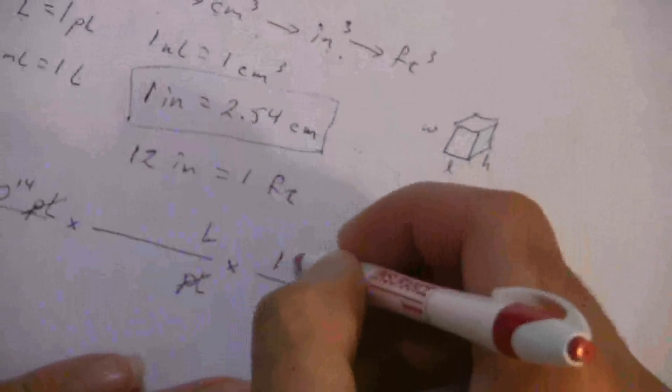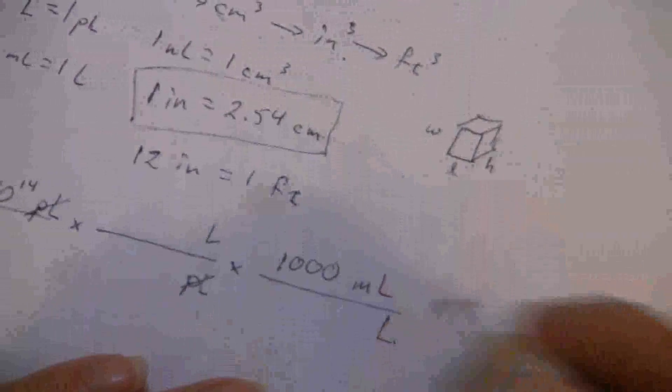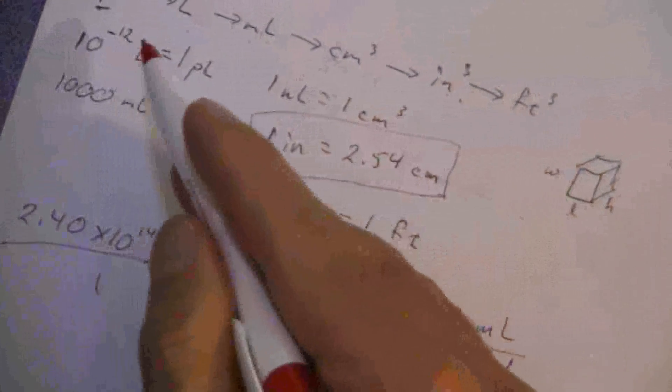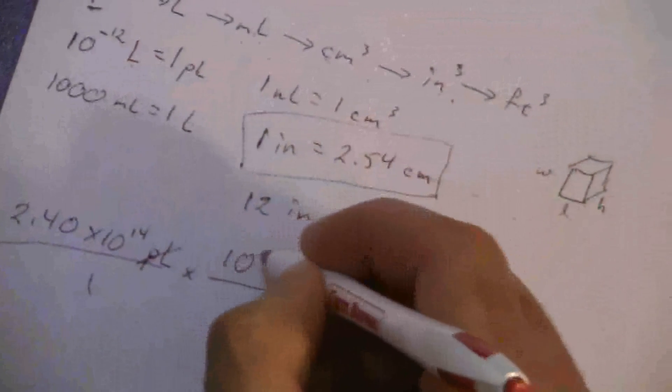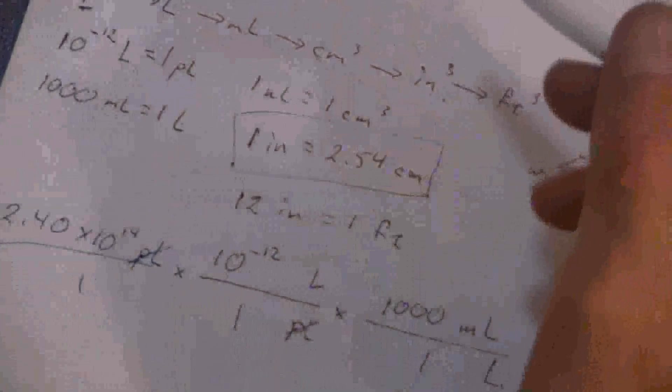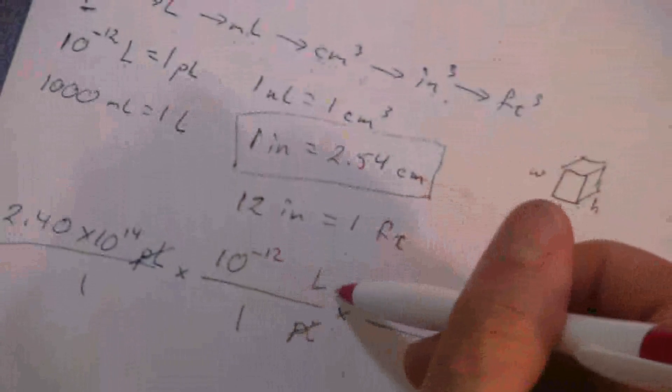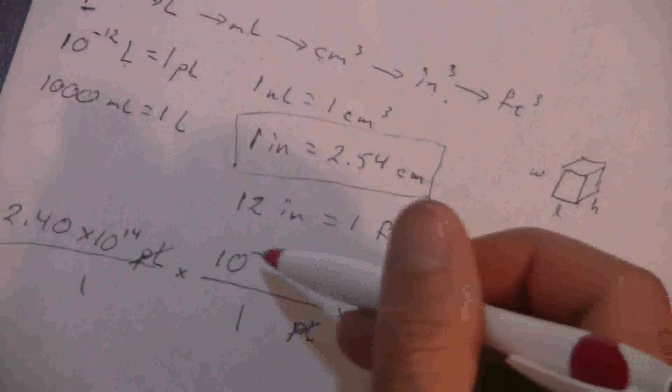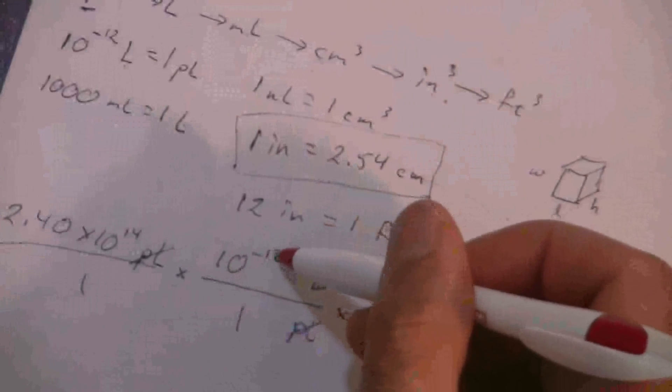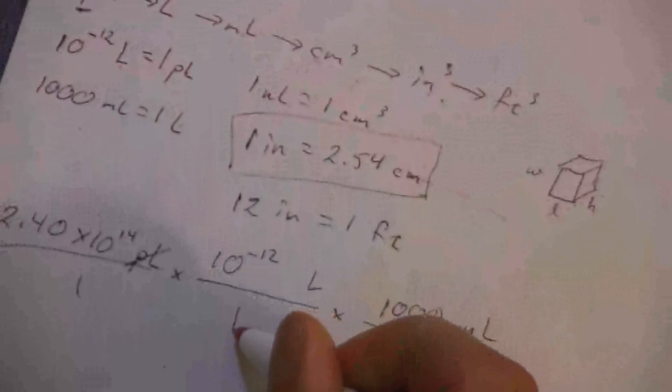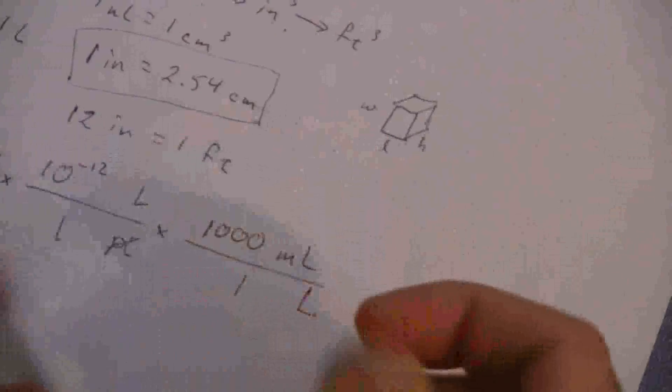I guess I can just go ahead and write these in here while I'm going. 1 liter is 1,000 milliliters, and then I have this as 10 to the minus 12 liters is 1 picoliter. Just like before, I could have said 1 liter is 10 to the positive 12 picoliters. So negative 12 if it's on the top or positive 12 if it's on the bottom. It won't make a difference, however I want to do that.